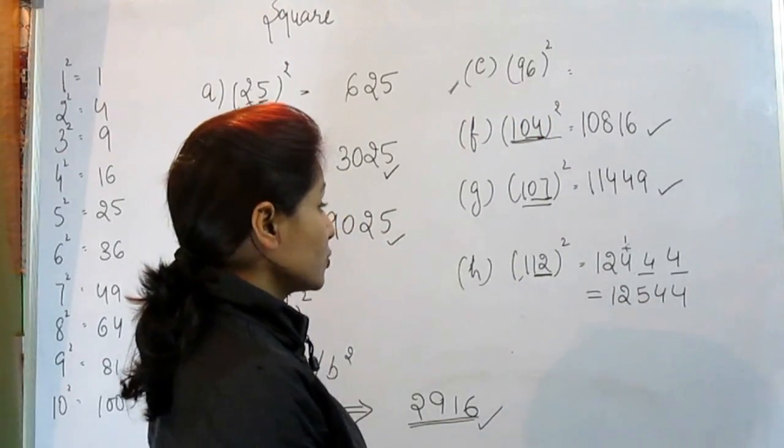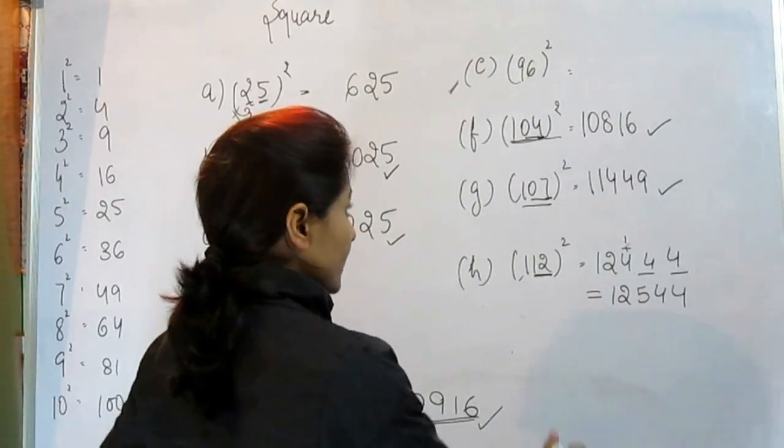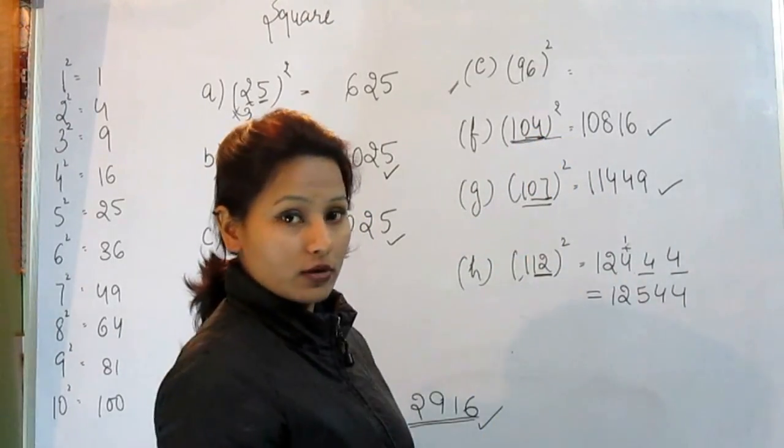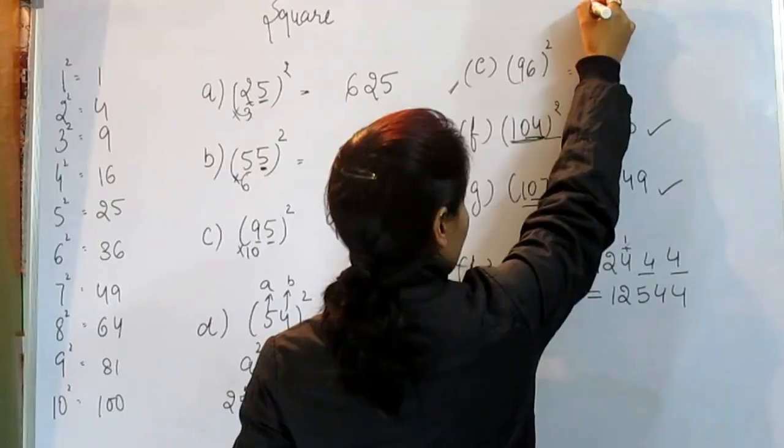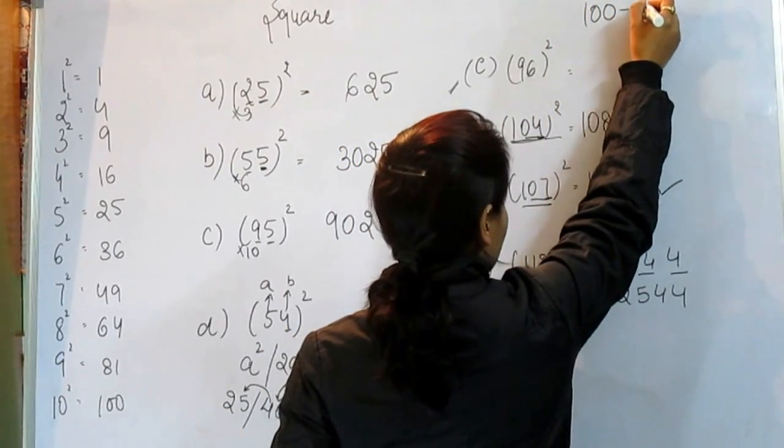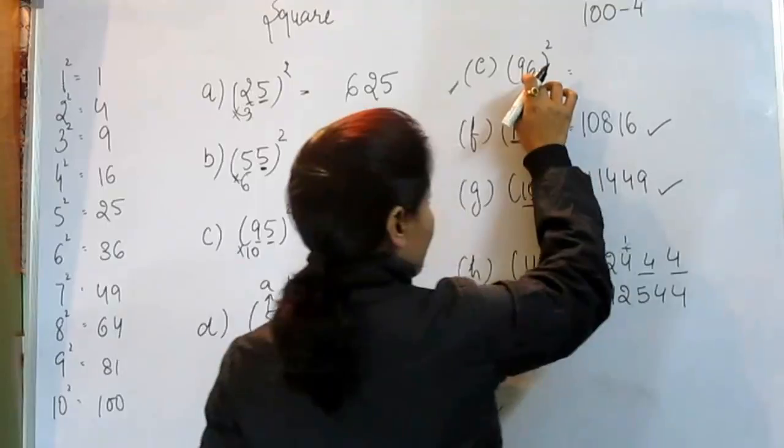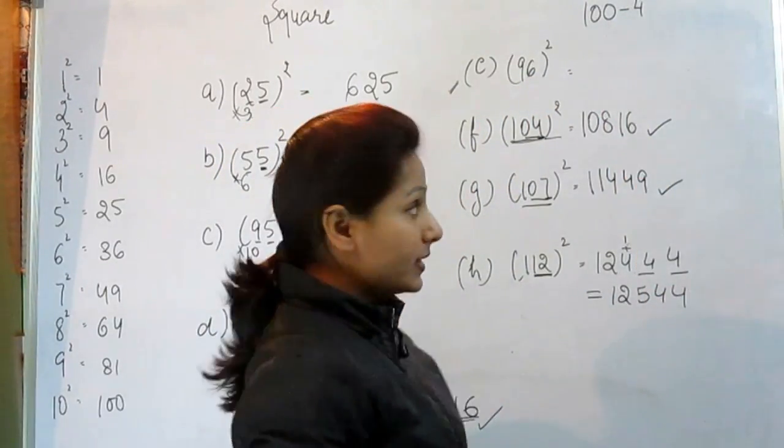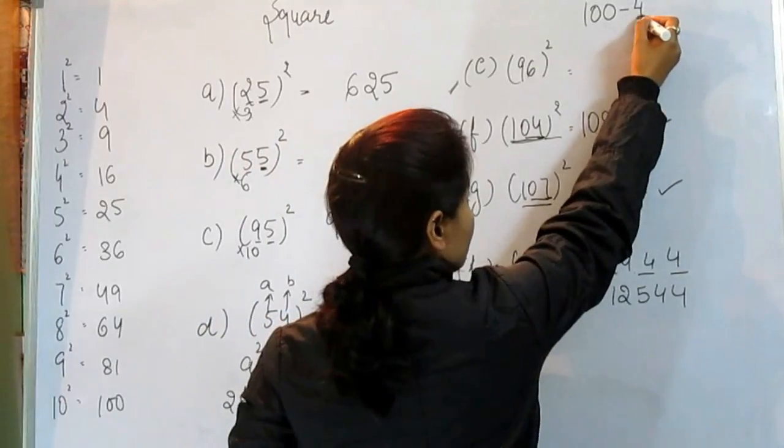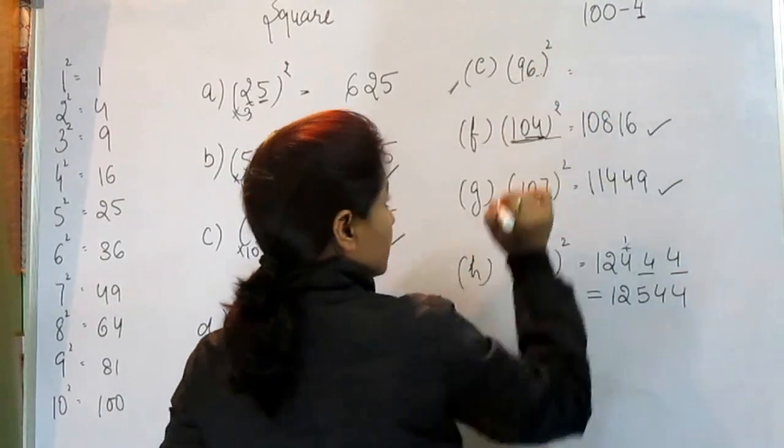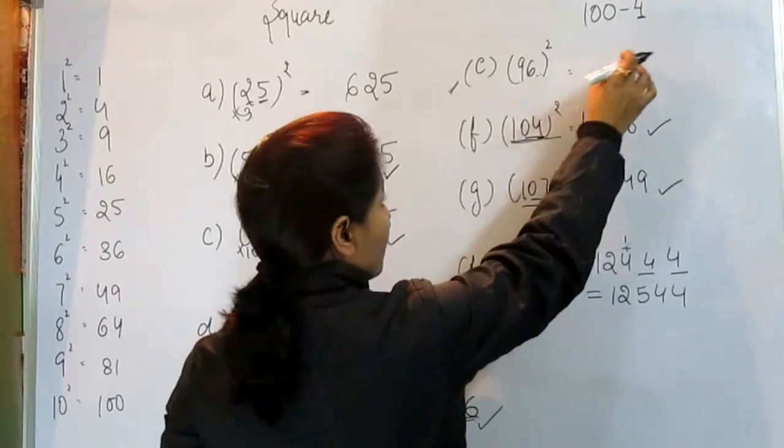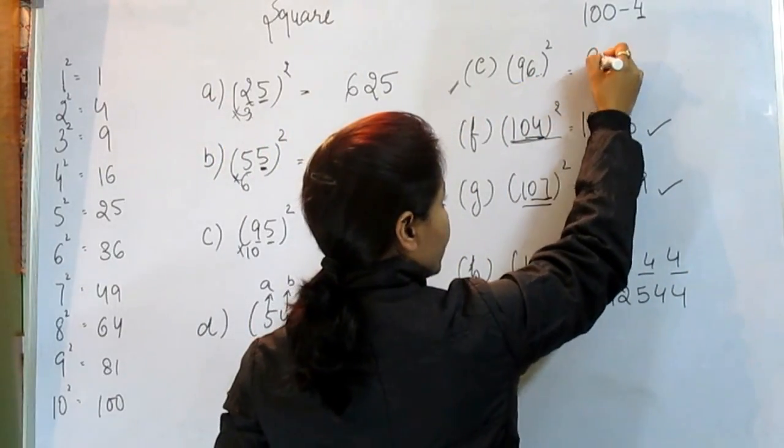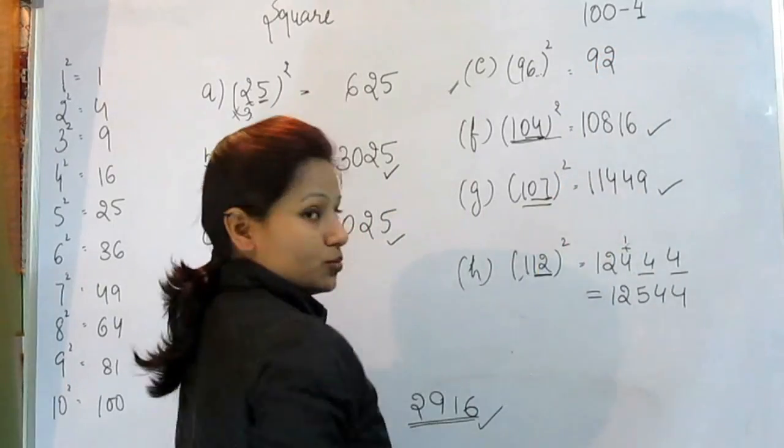96 into 96. Now, in this portion, we could see this is 100 plus 4. But this number is 100 minus 4. So subtract this 4 from this number. Subtract 4 from 96. What we get? We get 92.